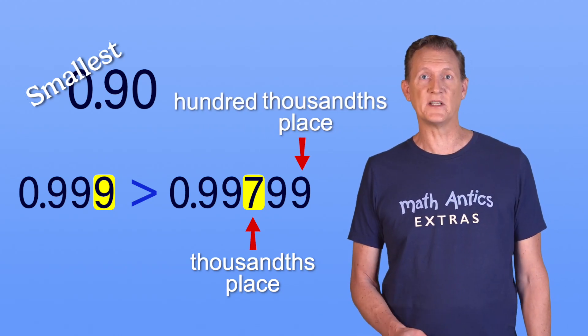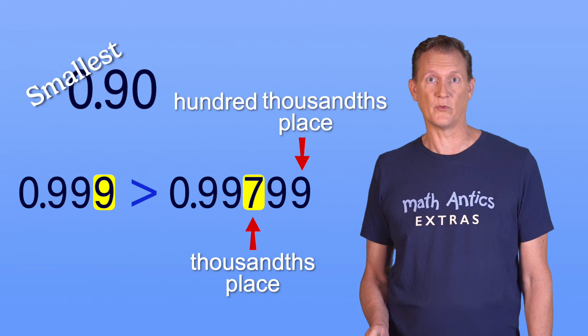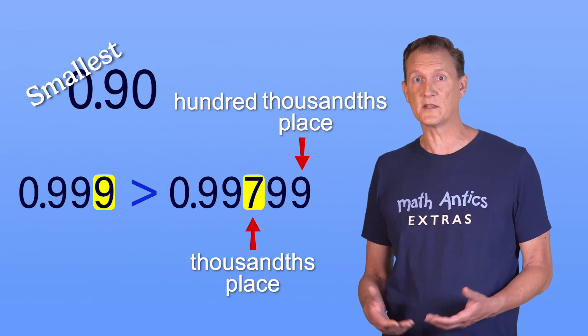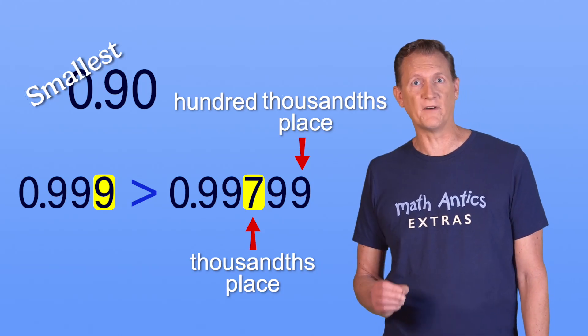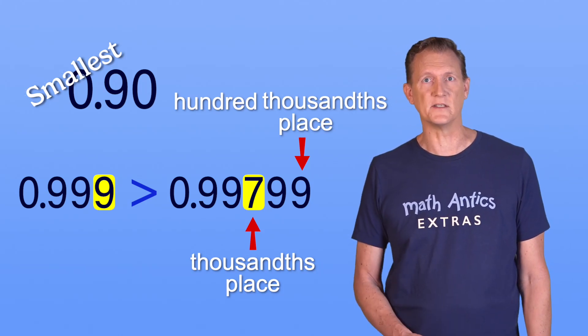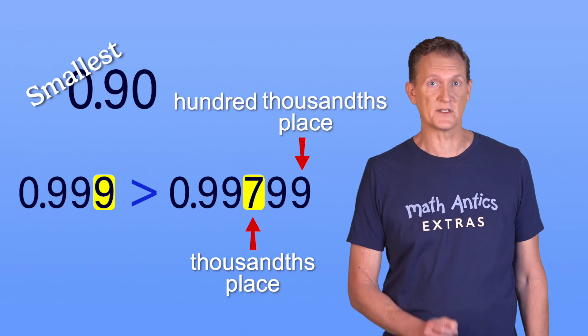Even though the number places sound like they're getting bigger as they go to the right - thousandths place, millionths place, billionths place - they're actually getting smaller and smaller, because if you divide something up into a billion pieces, each piece is going to be very small.